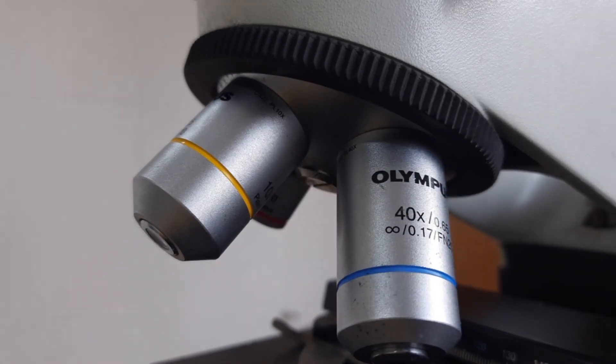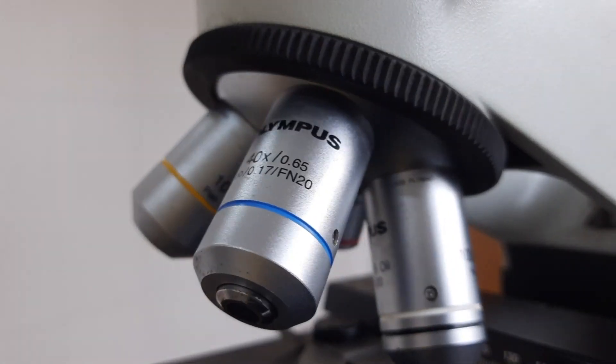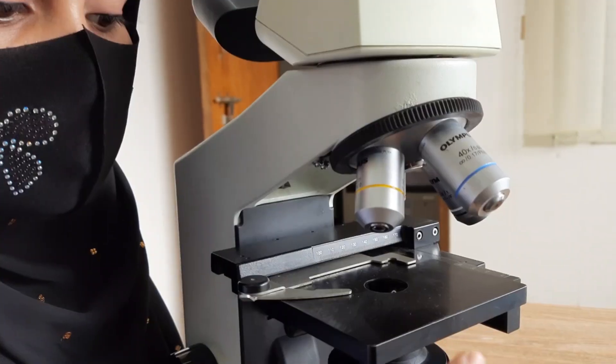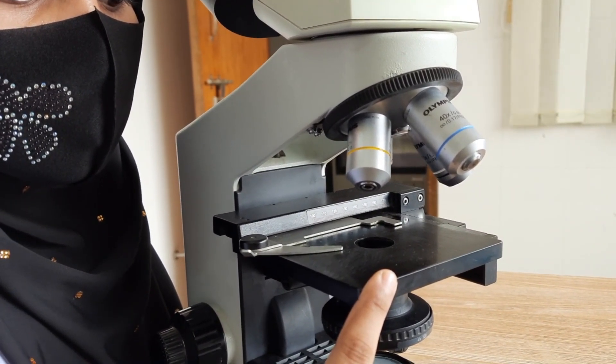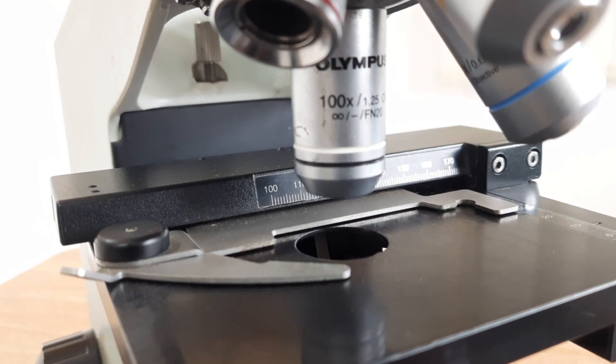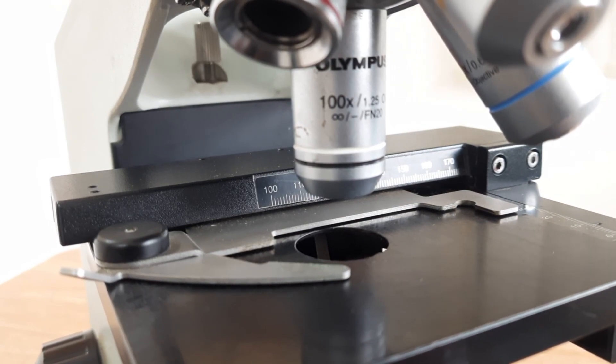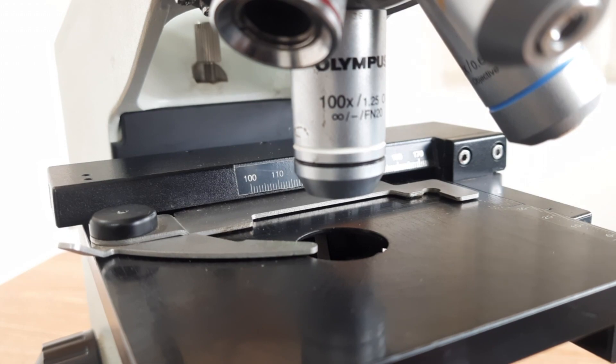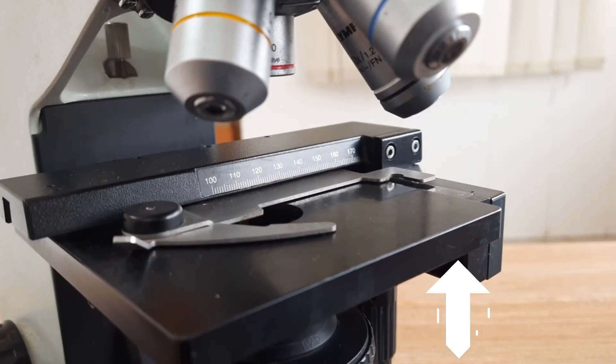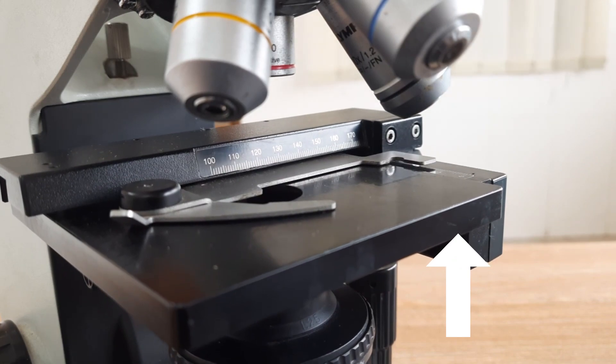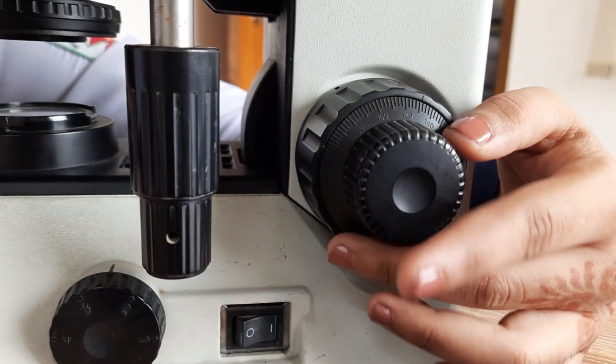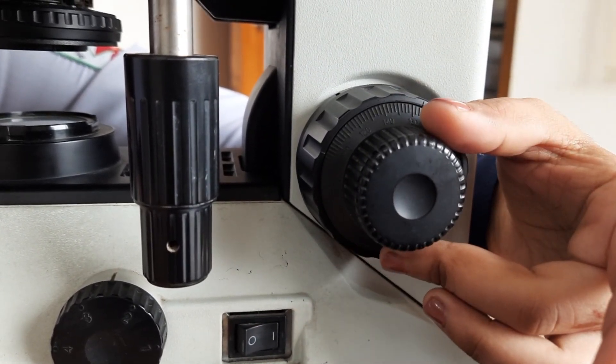The stage is the flat platform where you place your specimen for observation. It often includes a slide holder and stage clips to secure your slides in place. Some microscopes have a mechanical stage with controls that allow you to precisely move the specimen horizontally and vertically. These controls make it easier to navigate your sample.